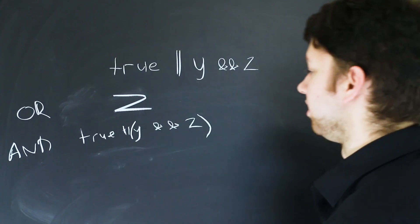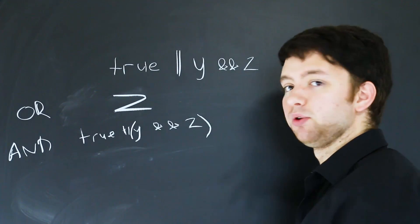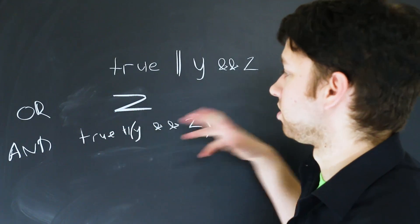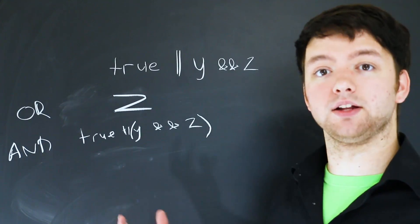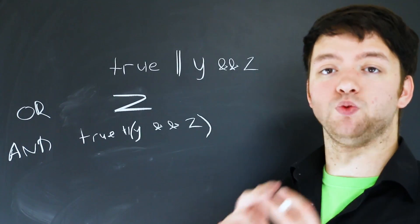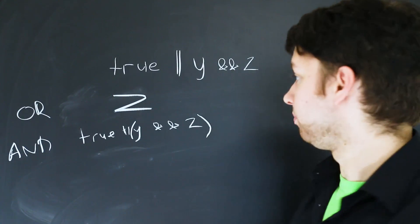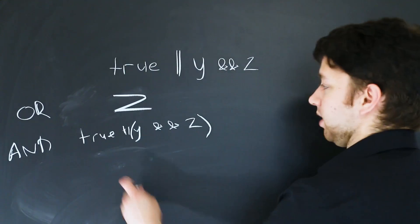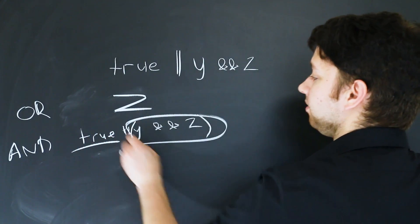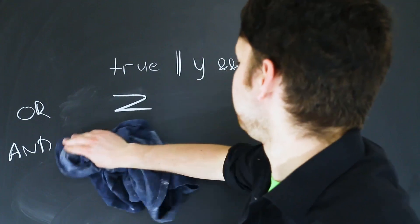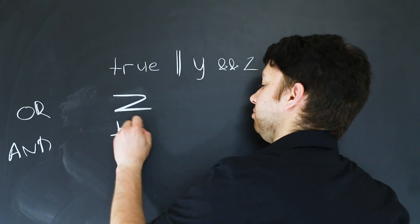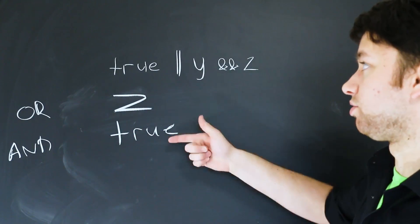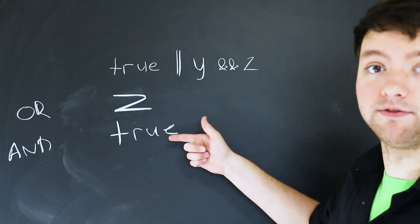The OR-first scenario is a little different. Just a minute ago we had true OR something else — it's automatically true because one of them is true. So this one is always going to be true because we have true OR something else. When simplifying, this is going to be just true. As you can see, the results are completely different — the expression simplifies in two different ways depending on the operator precedence.